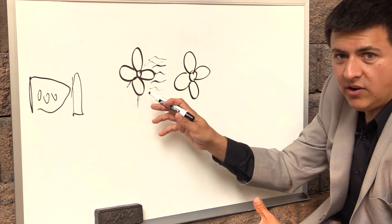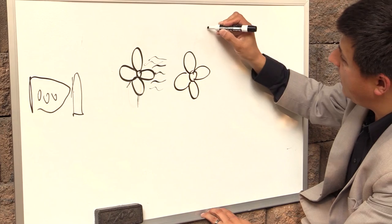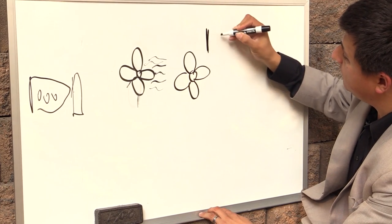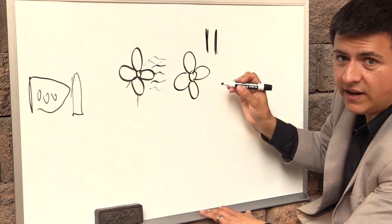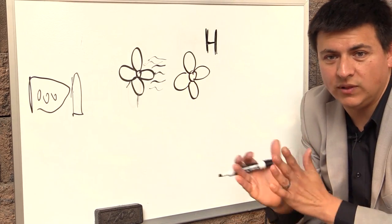So to solve that problem modern automatic transmissions use what they call a lockup feature. And basically you have one portion of the torque converter here and the other mating portion right here. There's a clutch pack that engages right in between them and that gives it a direct connection more like a manual transmission.